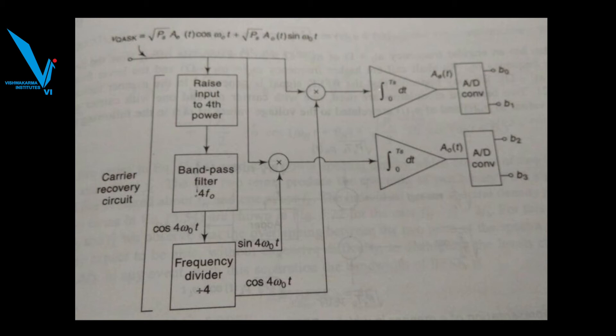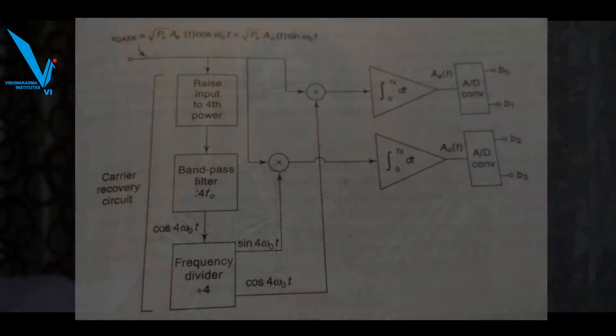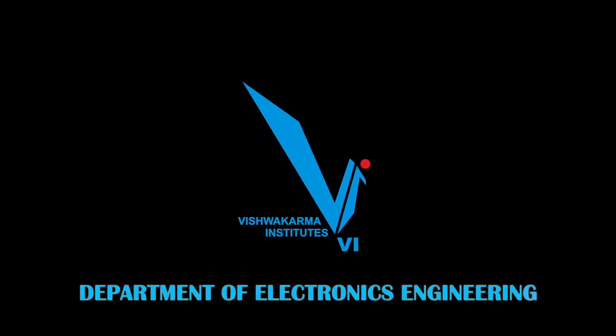Now this sin(ω₀t) and cos(ω₀t) go to the multiplier to which the input is also given, and then the output is given to the integrator. Output of the integrator goes to the A/D converter, and output of the A/D converter is the bits, the bit pattern or the input bits which are retrieved back. So two bits will be retrieved by one A/D converter and two will be retrieved by another A/D converter. You have aᵢ(t) and aQ(t) given to the adder, and finally four bits will be retrieved at the output.